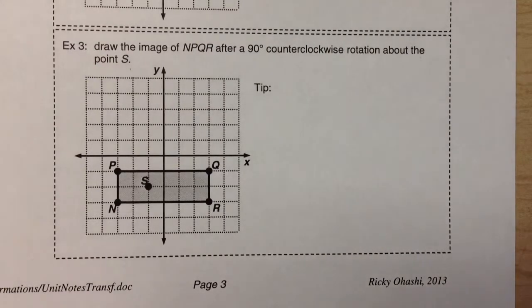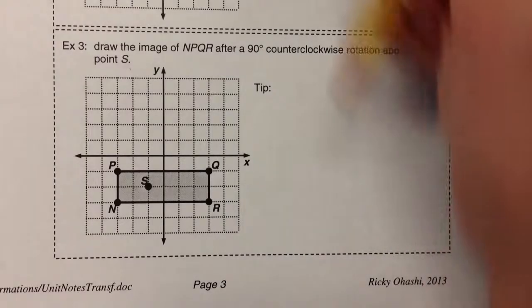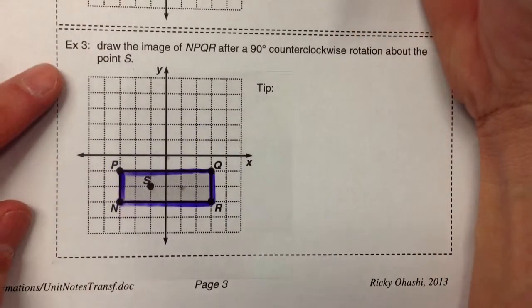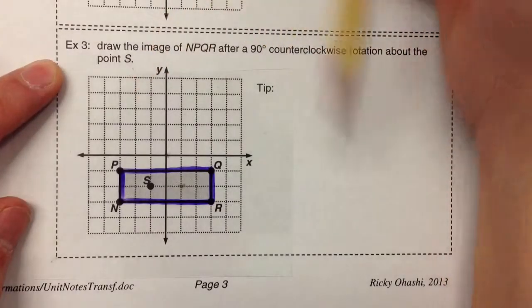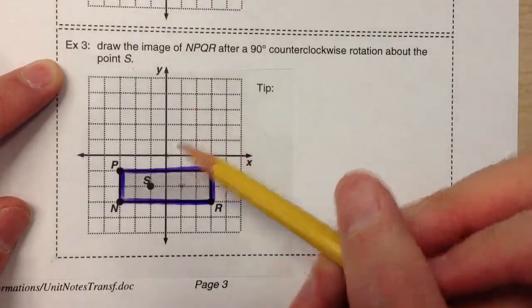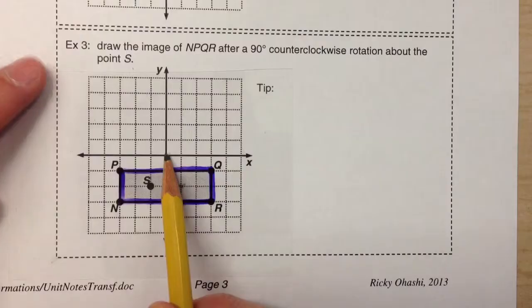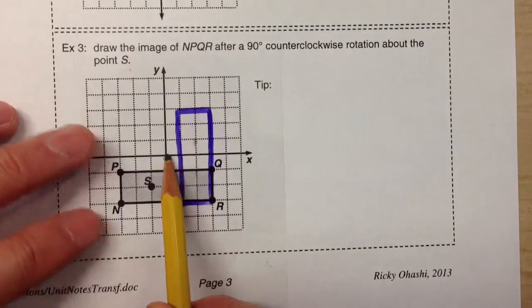Today we're rotating shapes on a coordinate grid, but we're not rotating it around the origin. For example, up until now we always had shapes and we would put our pencil points on the origin and we'd rotate the shape and that's where it would end up.